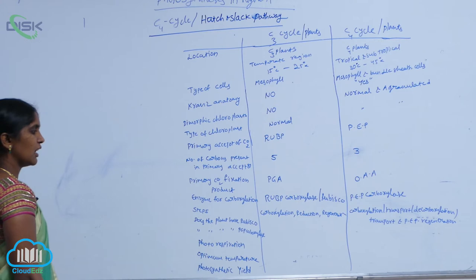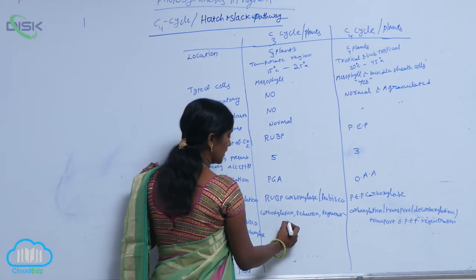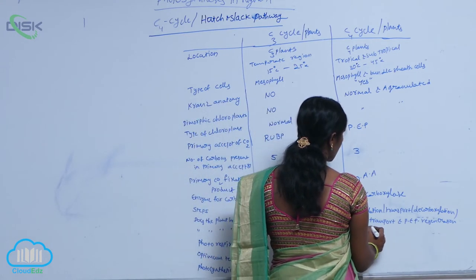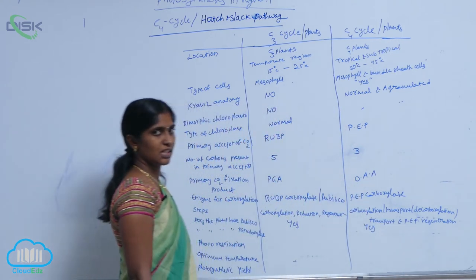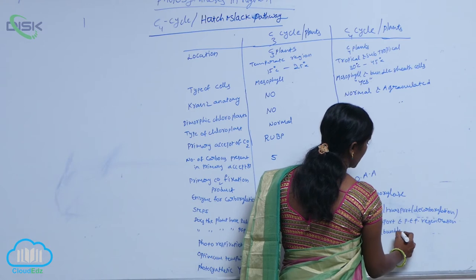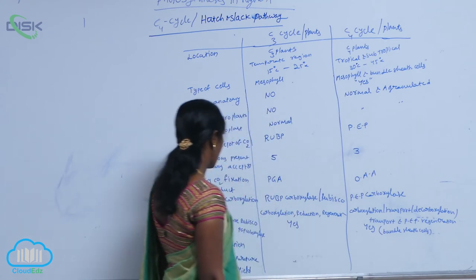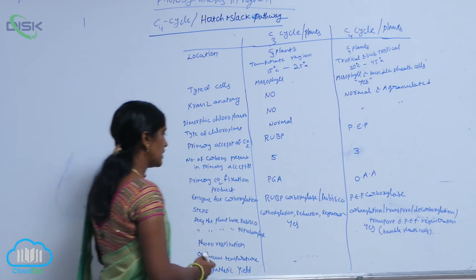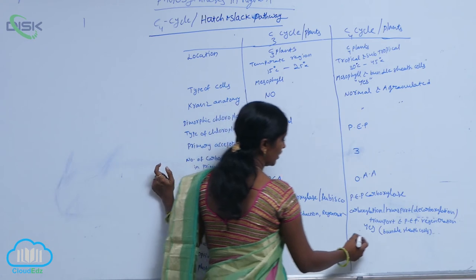Is RuBisCO enzyme present in C3? Yes. In C4 plants, RuBisCO is also present, but it is located in the bundle sheath cells. Do C3 plants have PEP carboxylase? No. C4 plants do have PEP carboxylase.